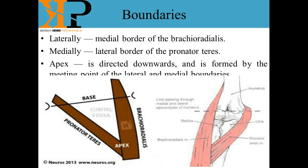The boundaries of the cubital fossa: in this picture you can see the ulna bone and the radius bone. The lateral side has the brachioradialis muscle, and on the medial side we have the pronator teres muscle. The lateral wall of the cubital fossa is made by the medial border of the brachioradialis, and the medial boundary is made by the lateral border of the pronator teres muscle.